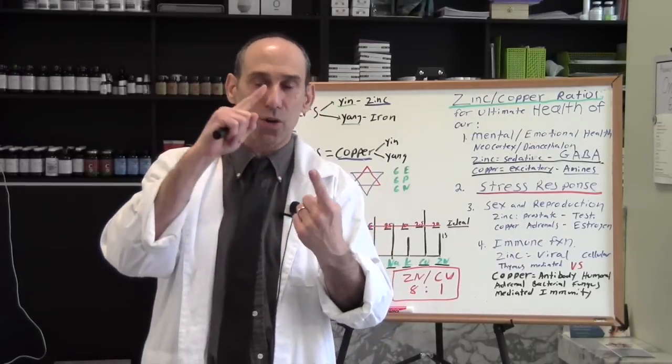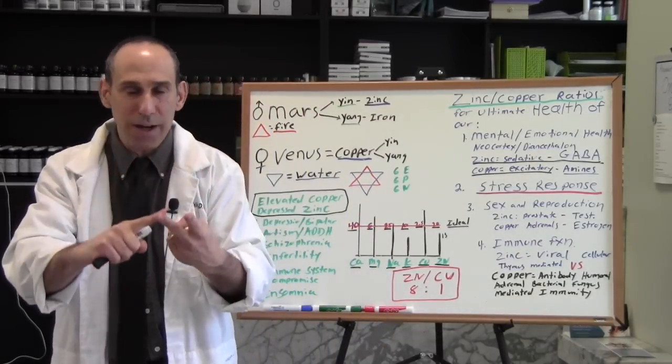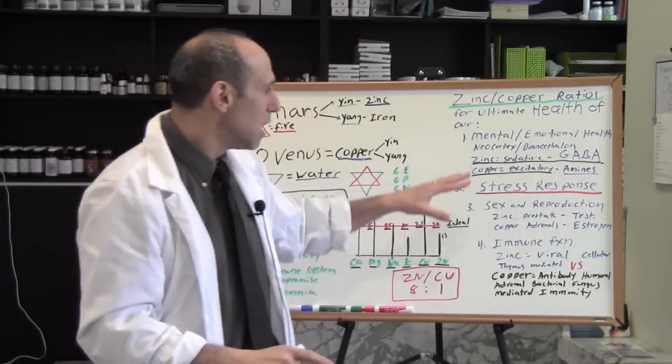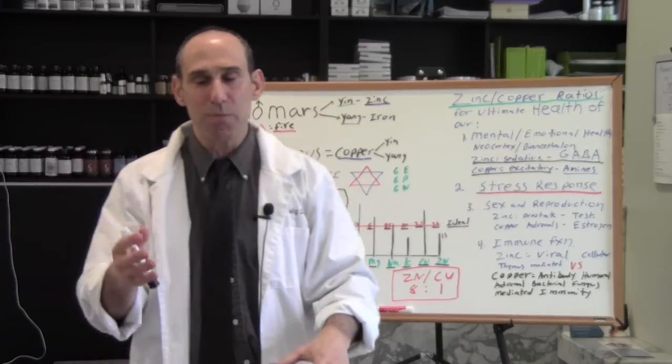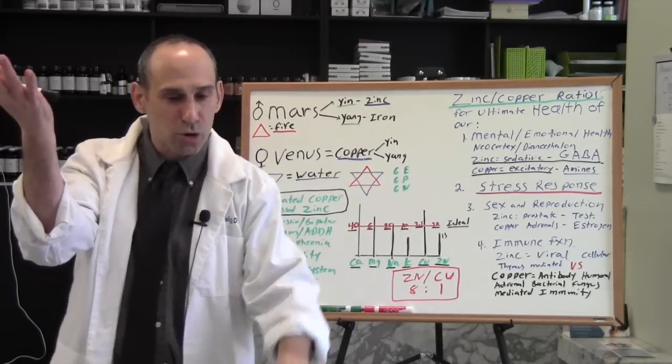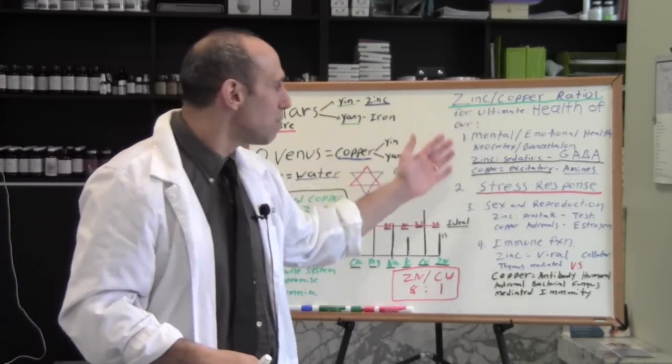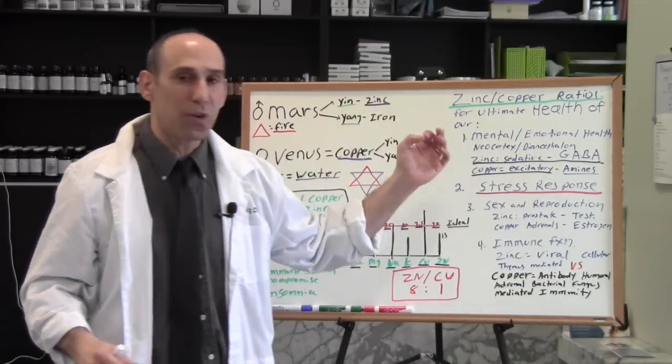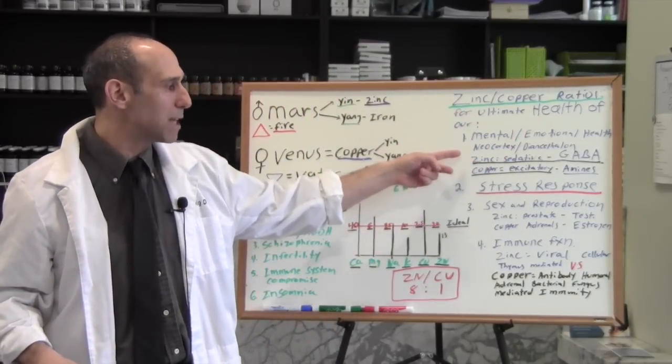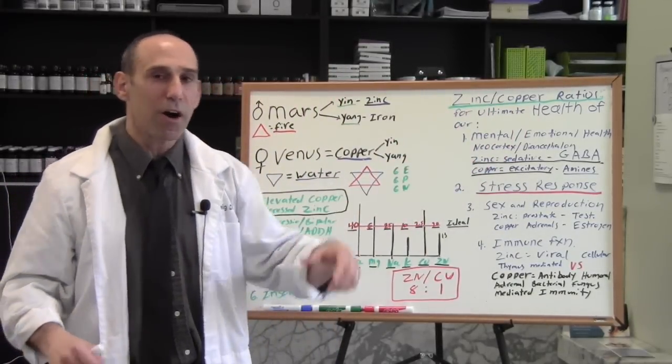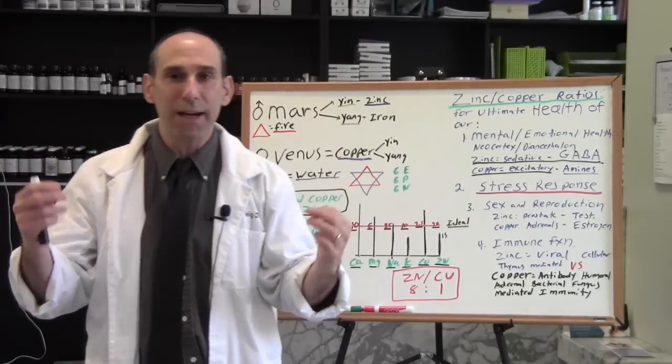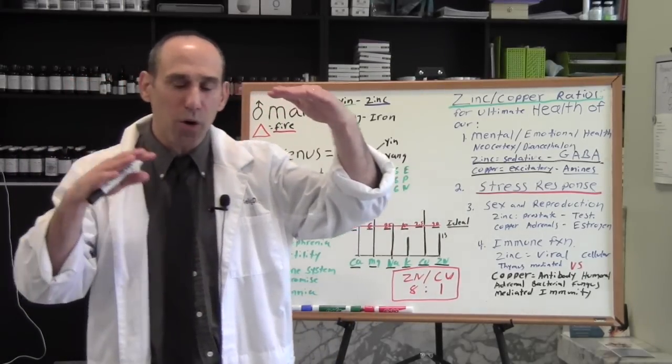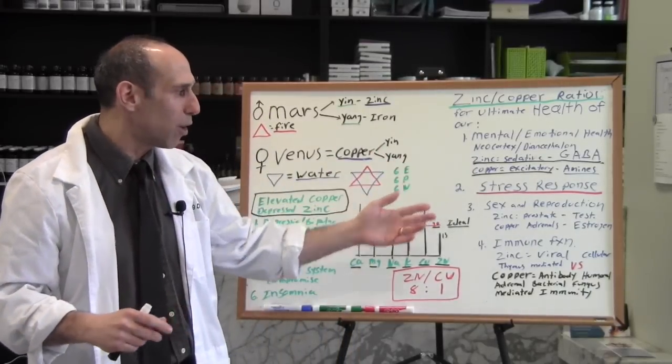And copper is more excitatory because copper is the backbone to making all your biogenic amines. Those are your norepinephrine, your adrenaline, your dopamine. And so we need to have balance between being too excited or too depressed. So this is the importance of mental emotional health based on balancing out the zinc and the copper of the old brain, the new brain, the excitatory or the relaxing aspects of these minerals.